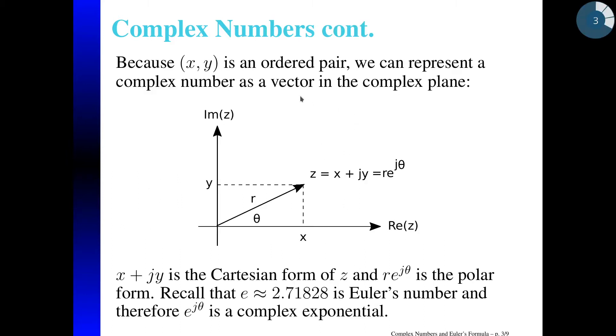Now, because X and Y form an ordered pair, we can plot them. And so here we have the complex plane. The X-axis is the real component of Z, so Z here is equal to X plus JY. The Y-axis is the imaginary component of Z. And so if we take our coordinates, X and Y, they form a vector in the complex plane. And the length of that vector is R, and it's at an angle of theta degrees.